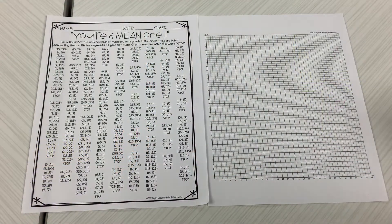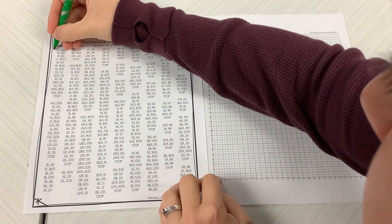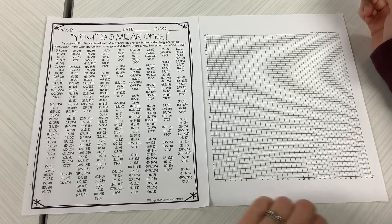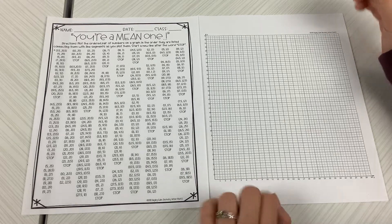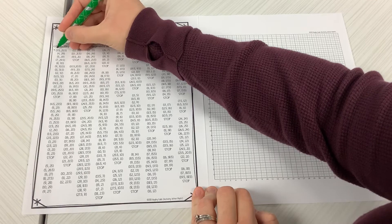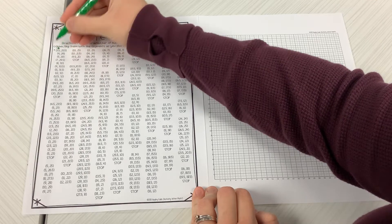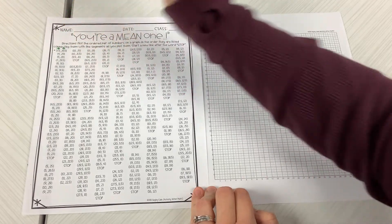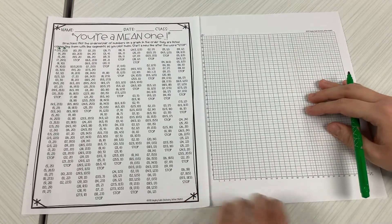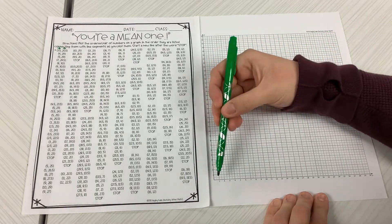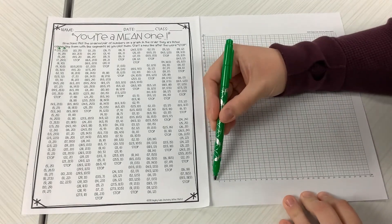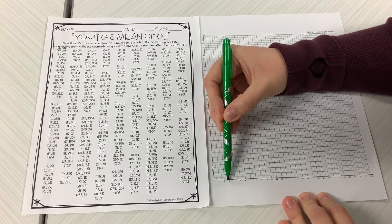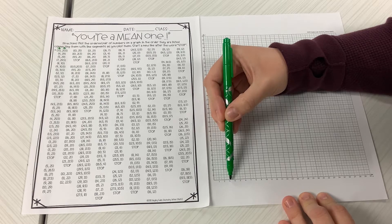All right, so we're going to start by looking at this ordered pair. It says three and a half, 25 and a half. So remember the first number tells us how far to go to the right. The second number tells us how far to go up. So if I'm going to look over here, I printed off the sheet that has halves. So this would be a half, one and a half, two, two and a half, three, three and a half.